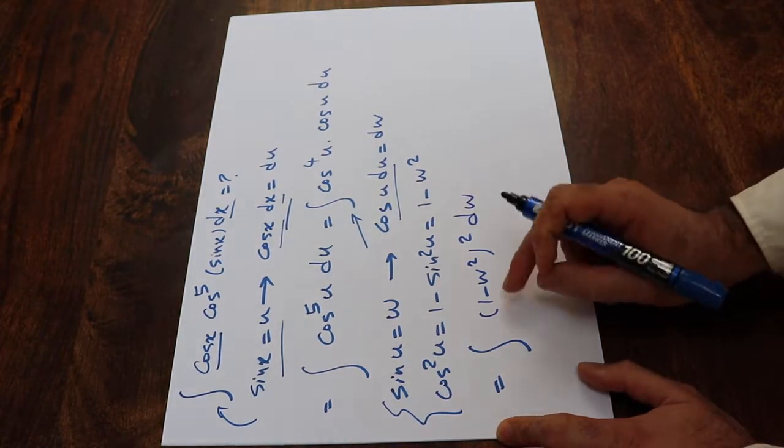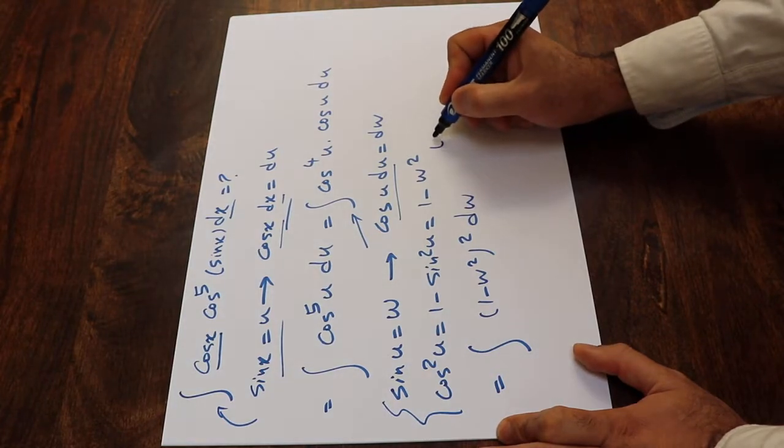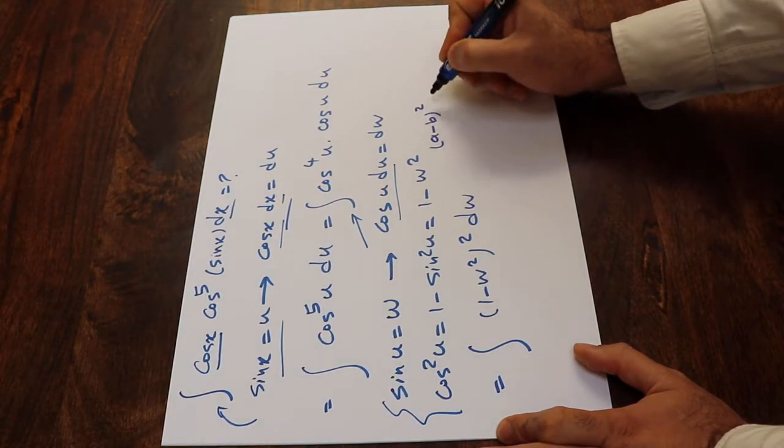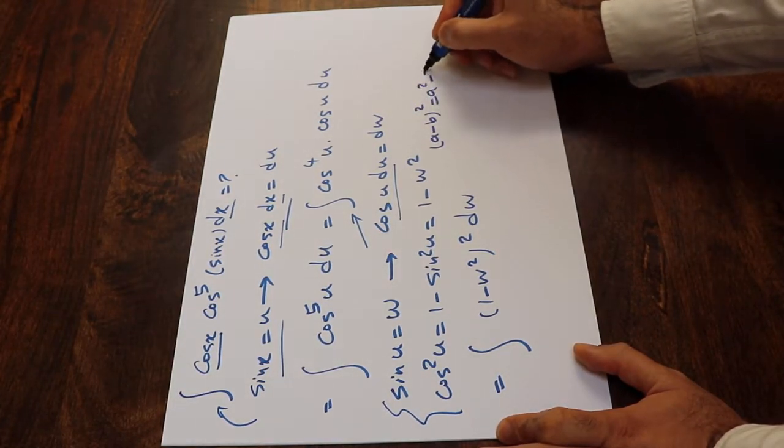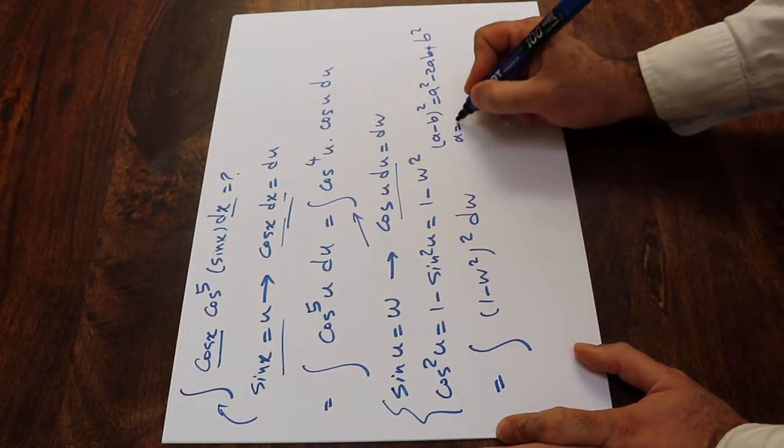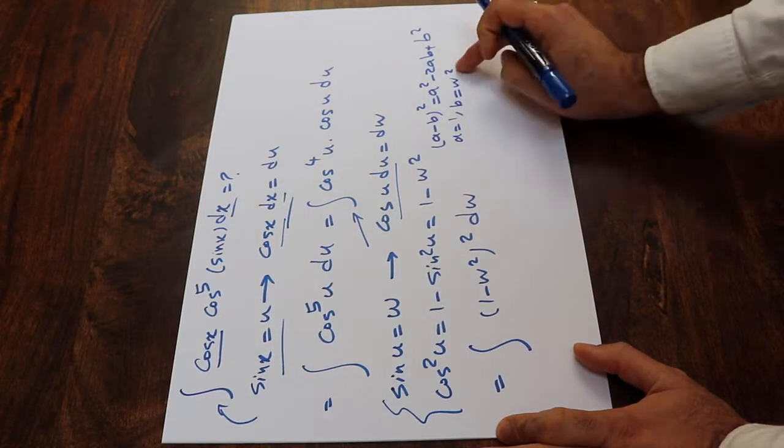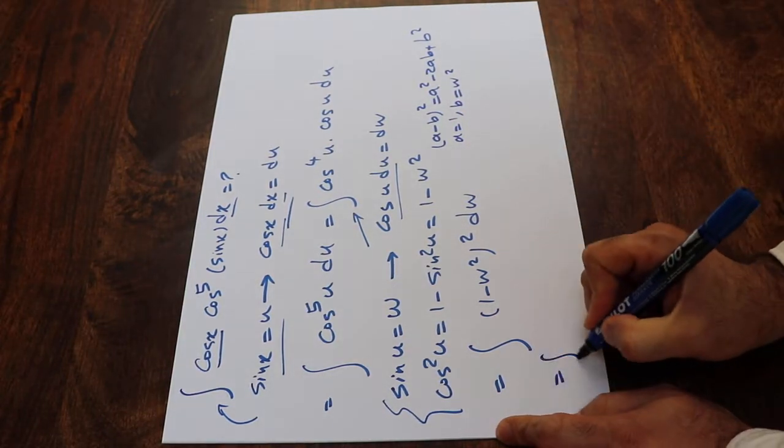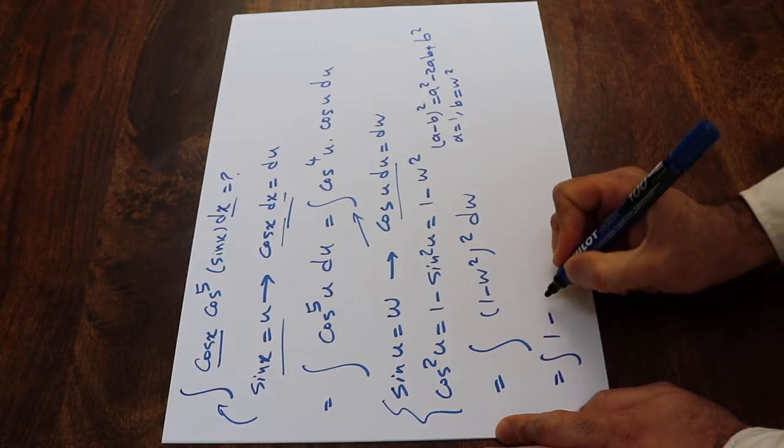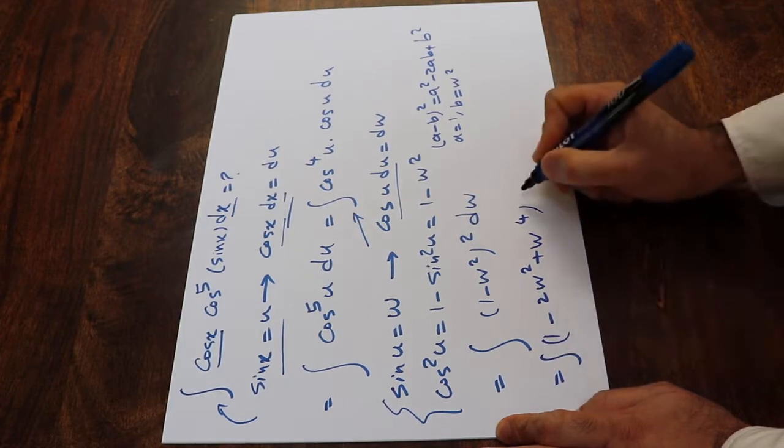Now to solve this integral, you need to expand it. From algebra, we know that (a minus b)² equals a² minus 2ab plus b². In this particular case, a equals 1 and b equals w². If you apply this formula, this integral becomes the integral of (1 minus 2w² plus w⁴)dw.